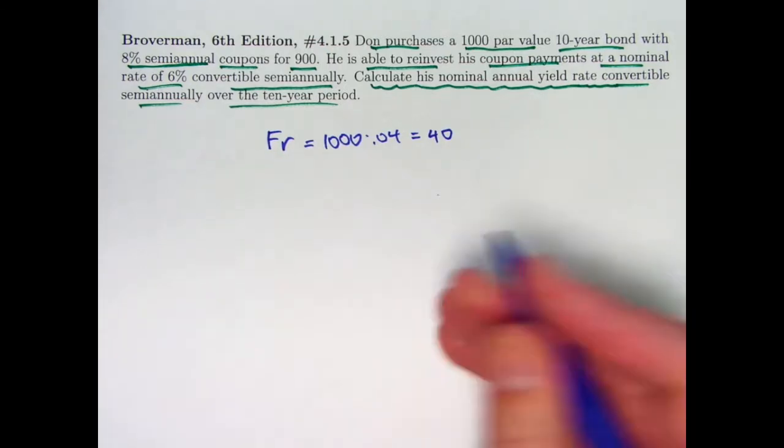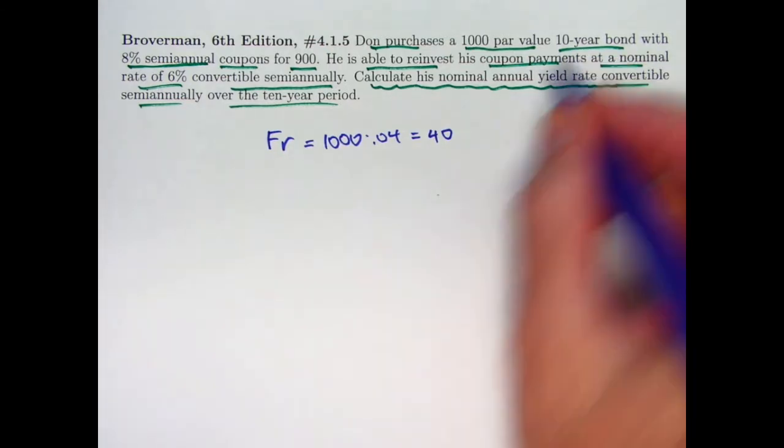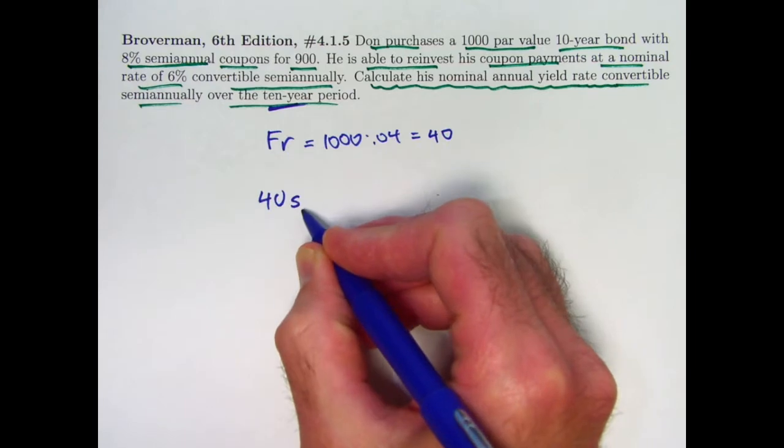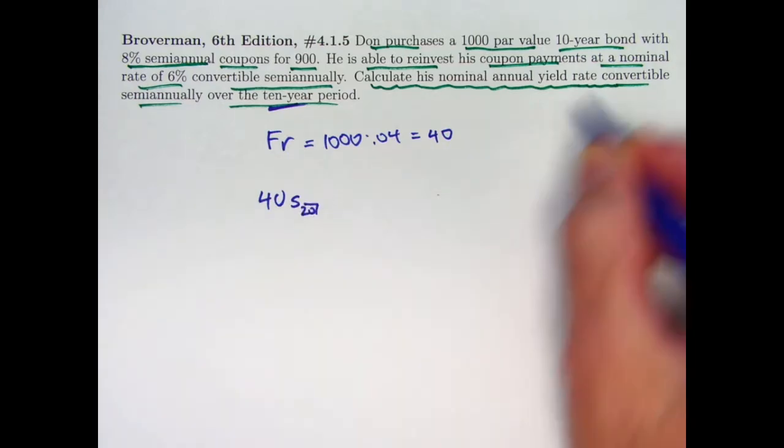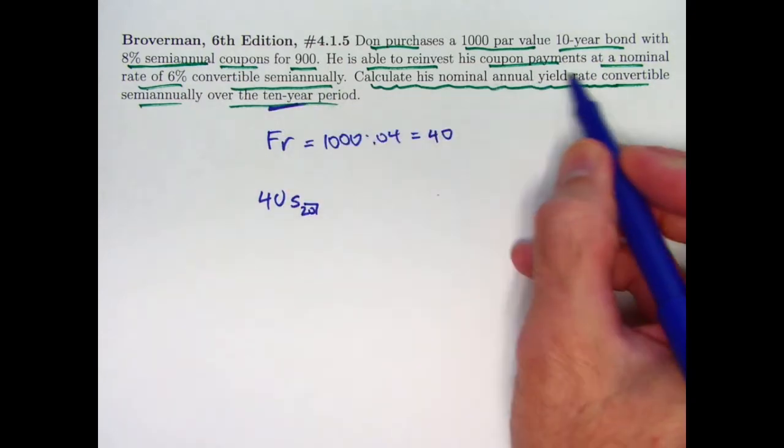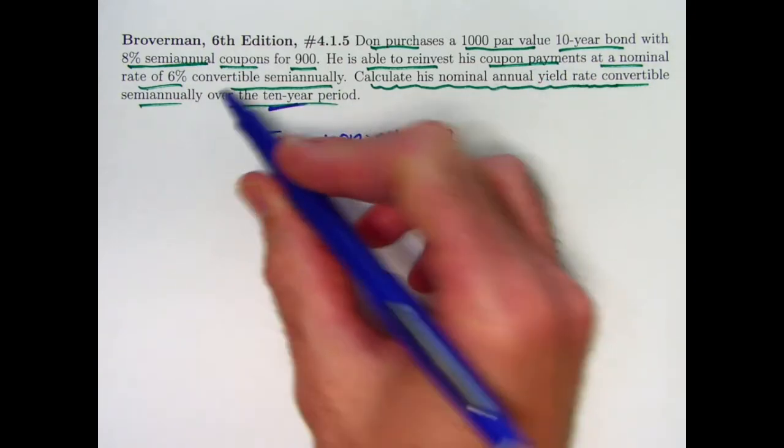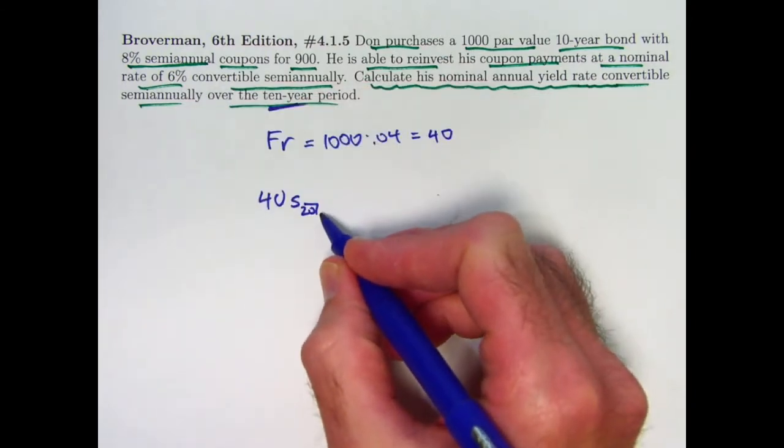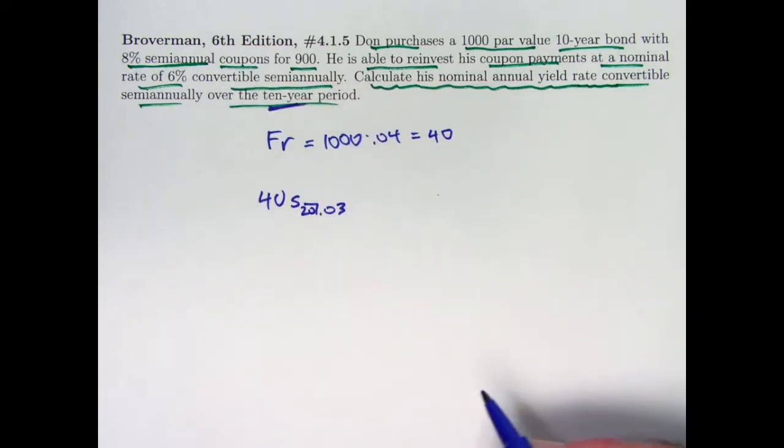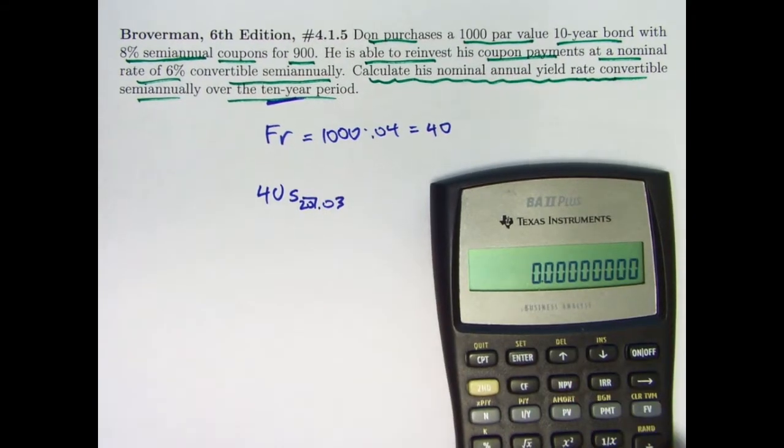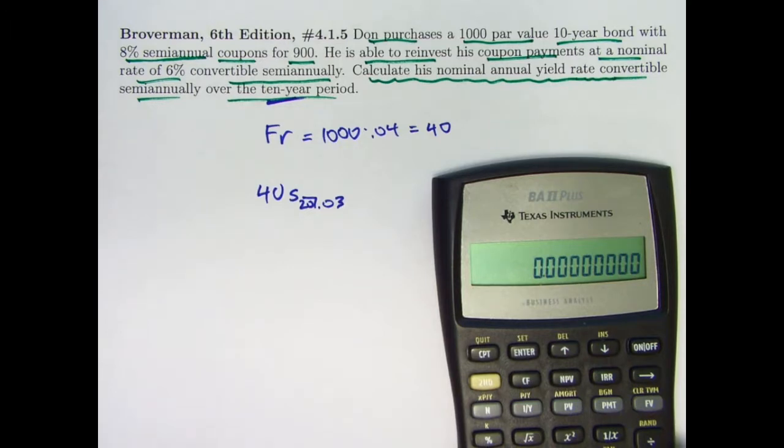And I want to find the accumulated value of that after 10 years. 10-year period here. The accumulated or future value would be 40 times S20. There are 20 payments because it's a 10-year bond with semi-annual payments of coupons. The coupon payments, again, are invested at a 6% rate convertible semi-annually. Take that 6% and divide it by 2 to get 3%, or 0.03. That is the future value we want to calculate for what the investments of these coupons grows to.